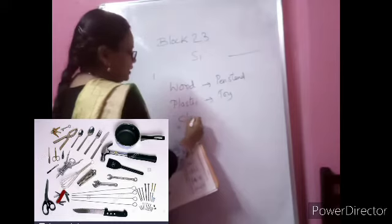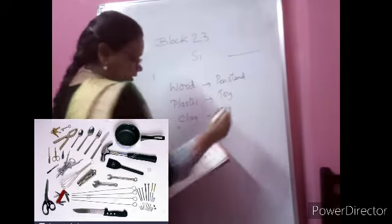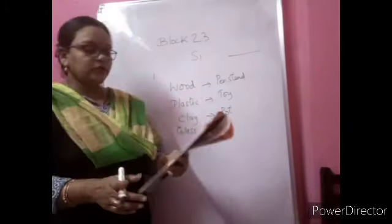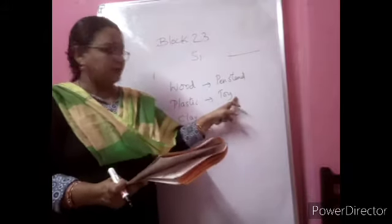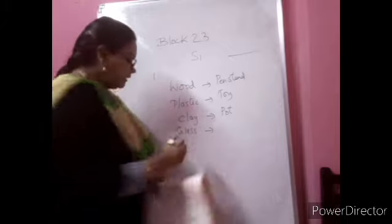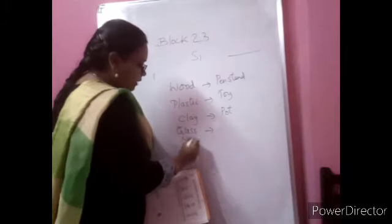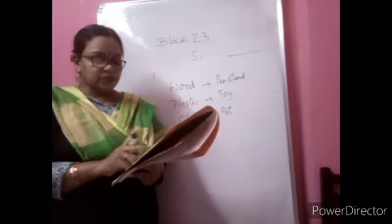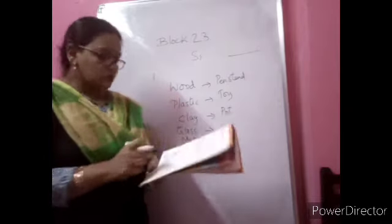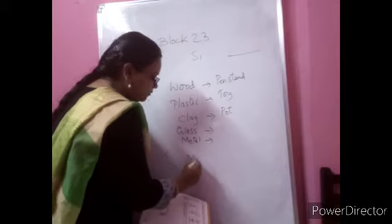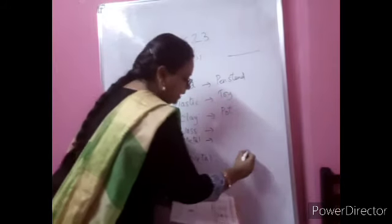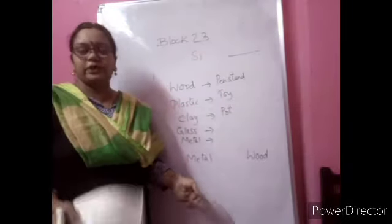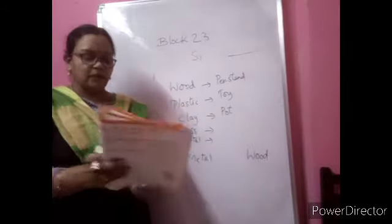For plastic, the toy is made up of plastic. For clay, you can see there is a pot. For glass, you can write glass bowl. For metal, you have to find objects made up of metal in the given picture. Complete this table. The second question asks with which objects you can categorize a car and a chair — the car is made up of metal and plastic, and the chair is made up of wood.